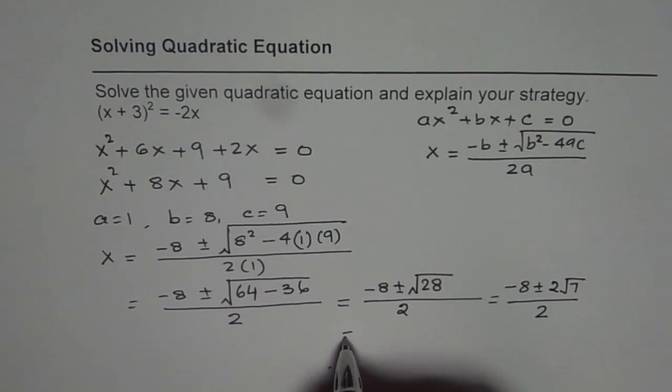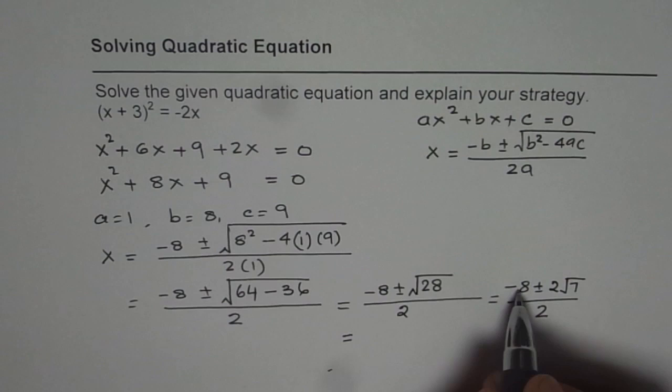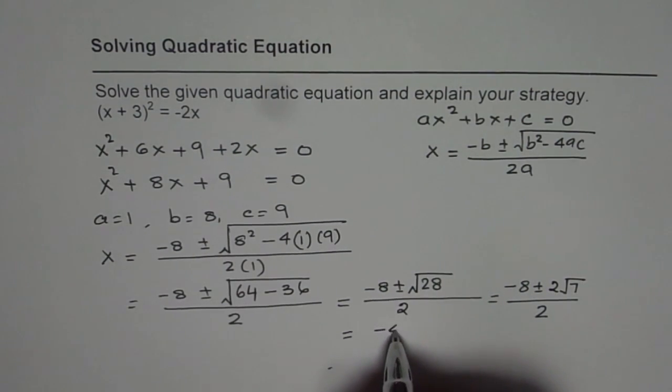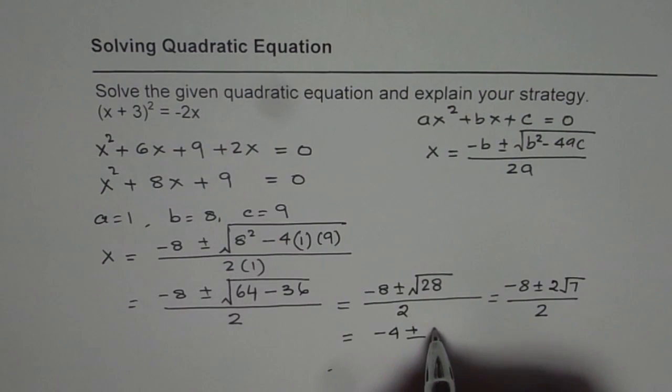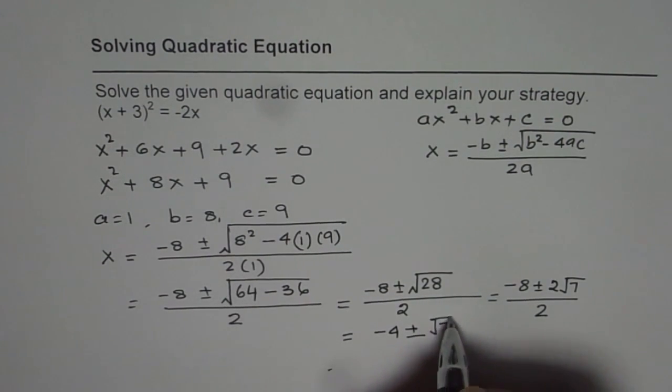Now that gives us 2 answers. 2 divides into -8 giving us -4 ± √7.